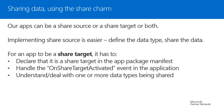Now let's look at sharing data using the share charm. Applications can be either a share source, a share target, or both. Implementing a share source is comparatively easier — you just define the data type and share the data. The data type could be text, an image, HTML content, custom data formats, or files. For a share target, the app must declare itself as a share target in the package manifest, handle the OnShareTargetActivated event, and deal with one or more expected data types.